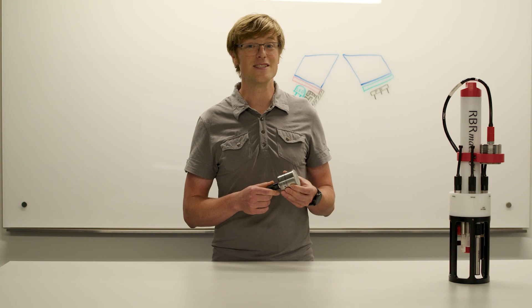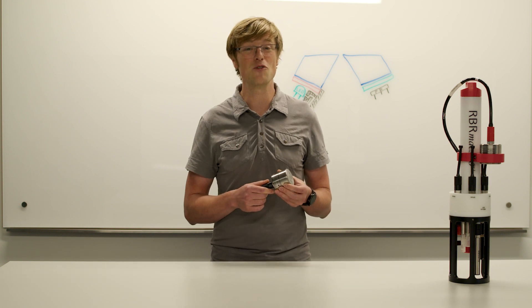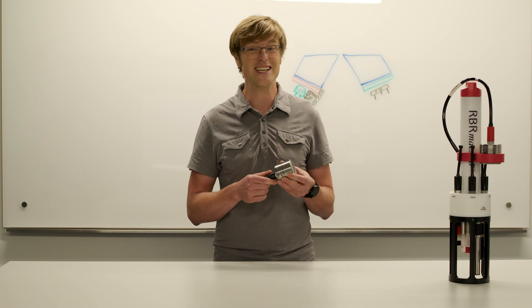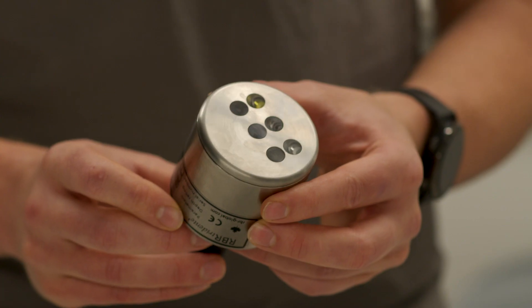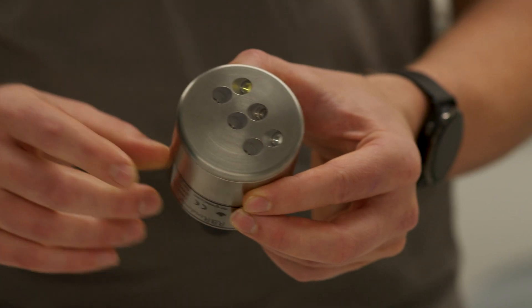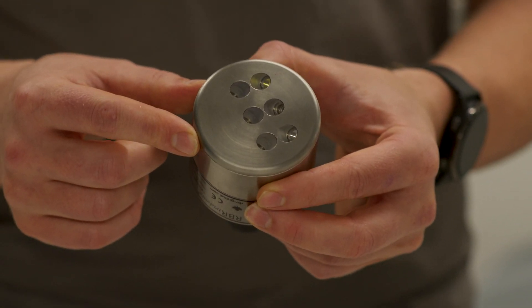The RBR Tridente is a three-channel optical sensor capable of making multiple fluorescence and backscatter measurements simultaneously. Its high dynamic range permits exposure to full sun with very low detection limits. The power consumption and depth rating has been tailored for use in a wide variety of applications.